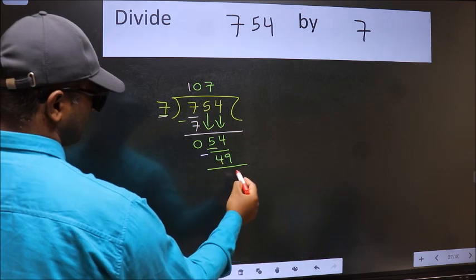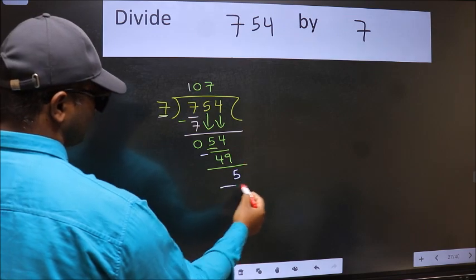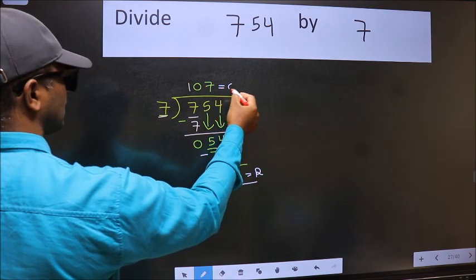No more numbers to bring down, so we stop here. This is our remainder, and this is our quotient.